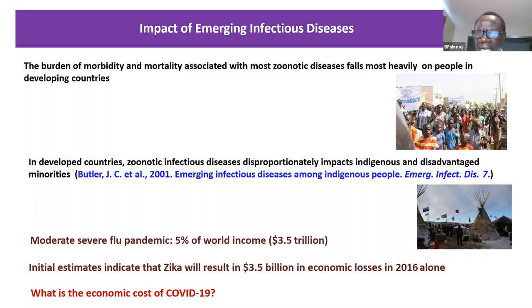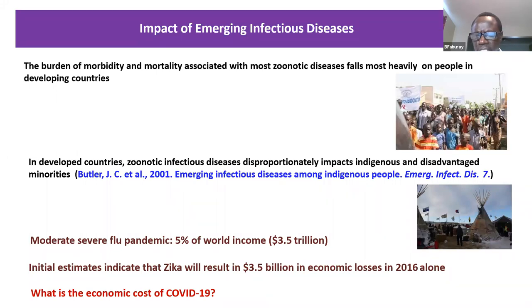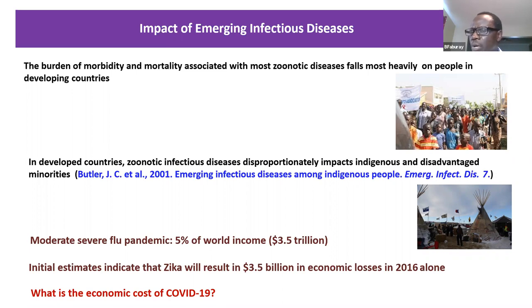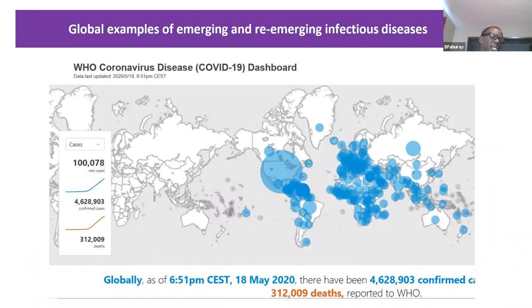In terms of economic impact, it's estimated that a moderate or severe flu pandemic could cost the global economy around $3.5 trillion dollars. For Zika, initial estimates around 2016 alone were around $3.5 billion. The economic impact of COVID-19 figures haven't fully come in yet since we are still dealing with it, but it is definitely well above any of those previous estimates. COVID-19 is a classical example of an emerging zoonotic disease.